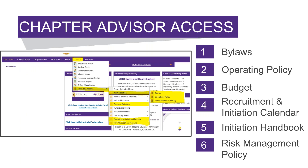The next section you have access to as a chapter advisor is the form 110 report, or our end-of-term report. First, there are six documents that need to be uploaded into the Chapter Admin Portal: bylaws and operating policy found under administration, budget found under financial activities, recruitment and initiation calendar and initiation handbook and manual found under recruitment initiation planning, and the risk management policy found under risk management planning.